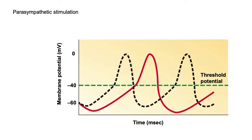Looking at the action potential graph: the black dashed line shows typical SA node pacemaker activity, while the red line shows pacemaker activity with parasympathetic stimulation. We see a slower drift to threshold, so action potentials occur less often, meaning a slower heart rate.